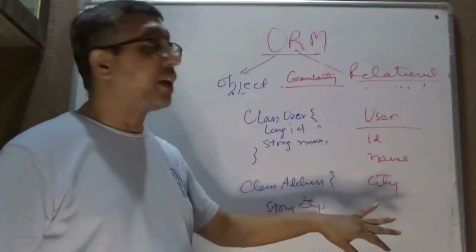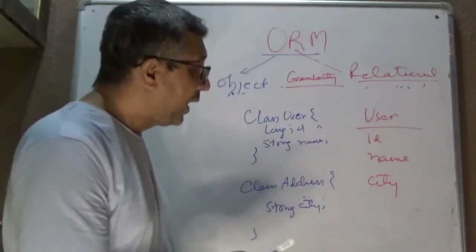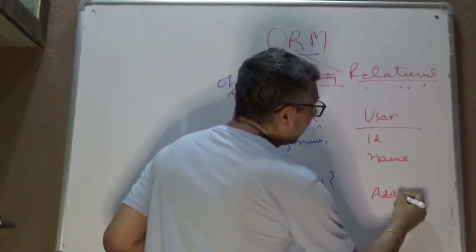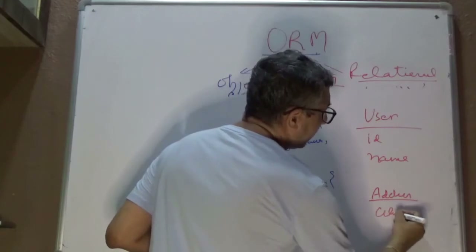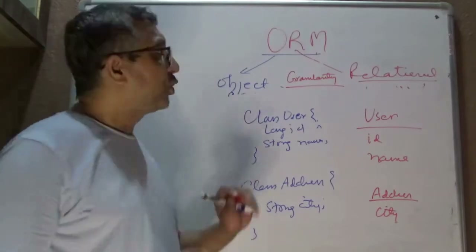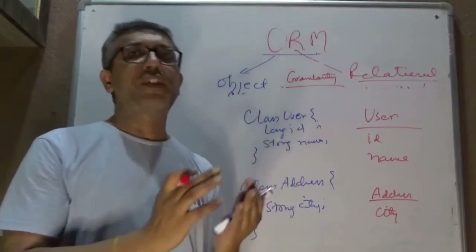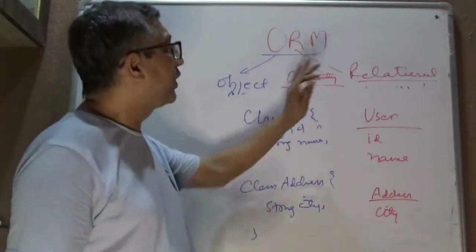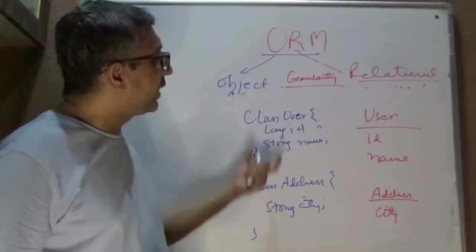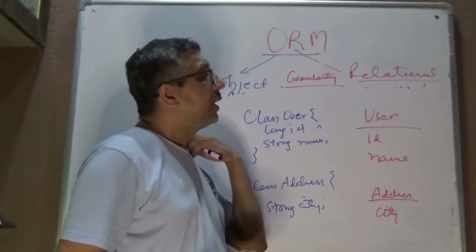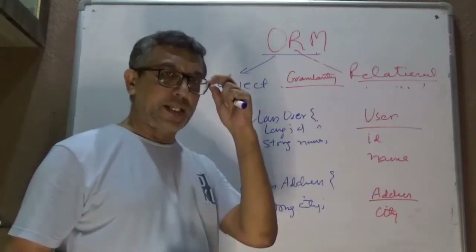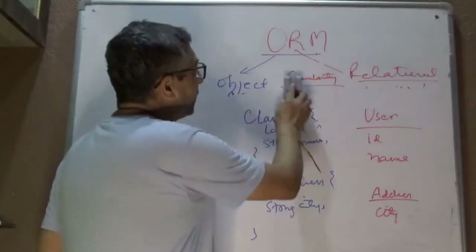It can also happen the other way: you might have a user table and want to put address as a separate table called 'city'. With ORM, you can seamlessly work with these mismatches — on the object side they automatically map to your User and Address objects, and while persisting it takes care of persisting accordingly.